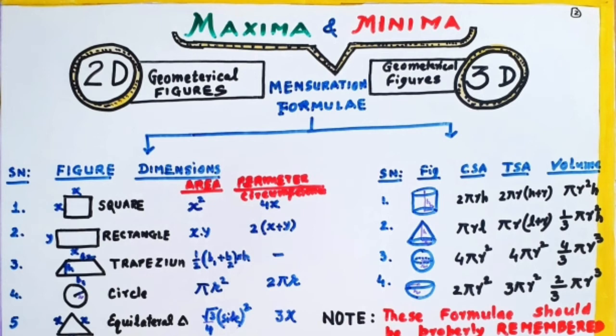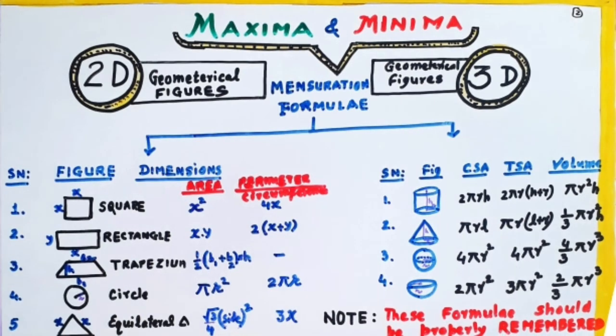In case of sphere, curved surface area is 4 pi r square. Total surface area is 4 pi r square. Volume is 4 by 3 pi r cube. And in case of hemisphere, it is 2 pi r square, curved surface area. 3 pi r square, total surface area. And 2 by 3 pi r cube is the volume.